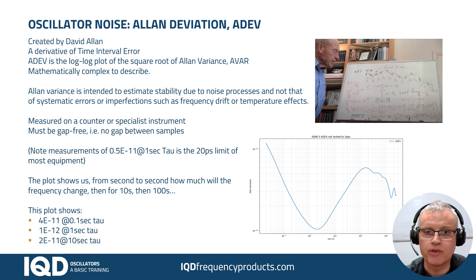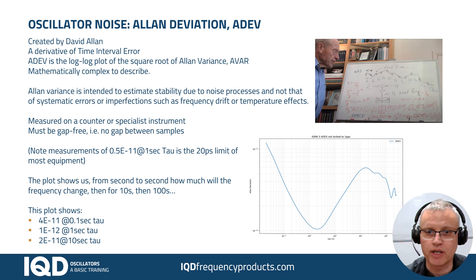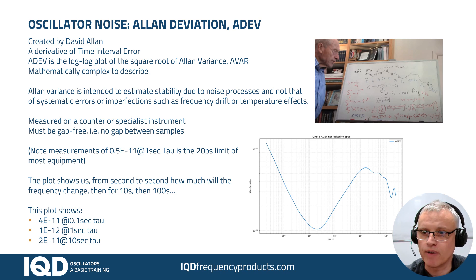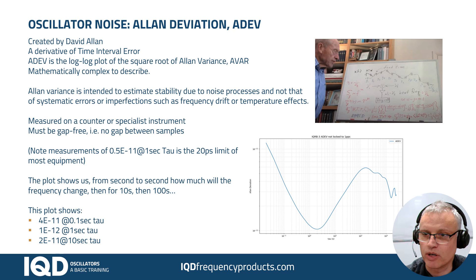Allan Deviation is the log-log plot of the square root of Allan Variance, and mathematically this is very complicated to explain. In a short presentation like this I'm not going to try, but if you want to, there's a link at the end of the presentation to a video where Dave Allen himself — the man in the photograph there — does explain the maths behind it, and you can see on his whiteboard the complexities that are going on here.